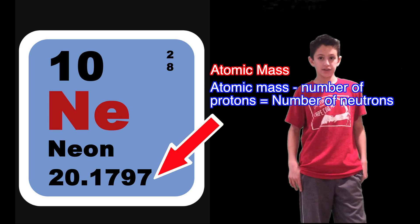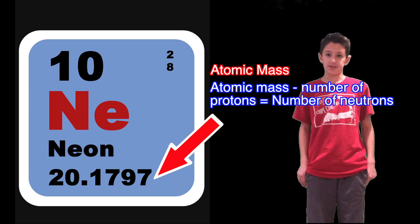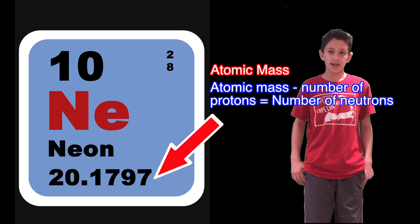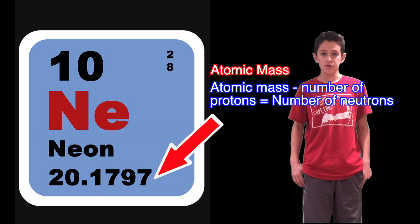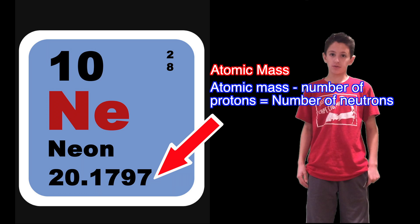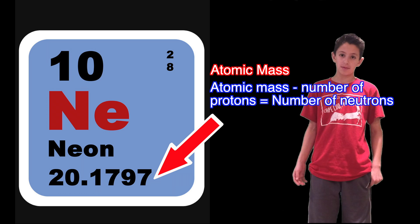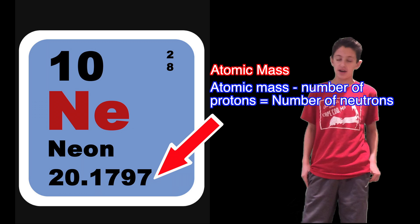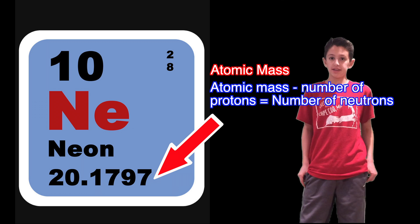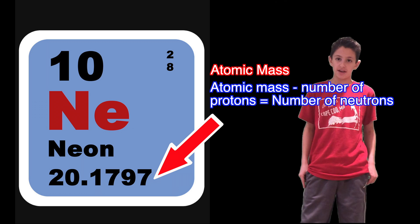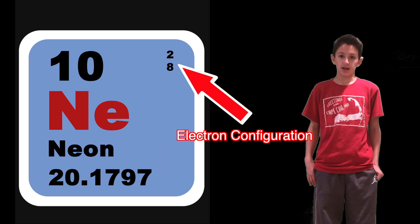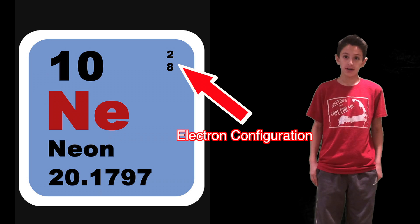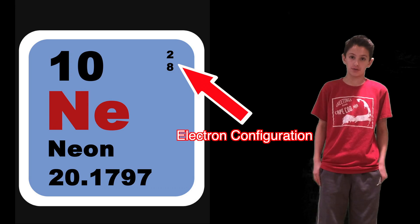The atomic mass is 20.1797. By using the atomic mass, we can calculate the number of neutrons. First, we round off the atomic mass, giving us 20, and then we subtract the number of protons, which is 10, to get the number of neutrons, which will be 10. Its electron configuration has a 2 and then an 8, so both of its shells are full.